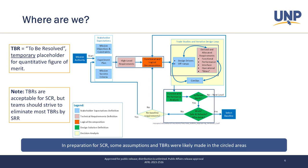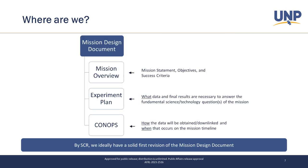One thing we'll start to mention is TBR — kind of like TBD, but TBR means you've put a number in there but you're not sure if it's actually the right number. It still needs a little more work, but a TBR usually means we already have an estimate of a number, just not the confirmed value. The mission design document captures all the topics SCR will focus on: mission statement, objectives, success criteria, the experiment plan, data, final results to answer your science or technology question, and the ConOps timeline. By SCR, we're expecting a solid first revision of this document.